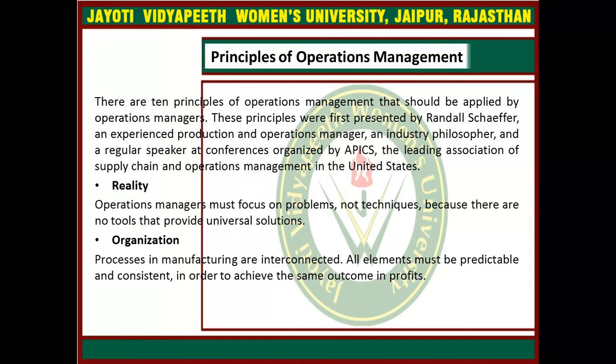In this, operations managers must focus on problems, not techniques, because there are no tools that provide universal solutions. The second is the organization. In this, processes and manufacturing are interconnected, because in an organization all things are interconnected. All elements must be predictable and consistent in order to achieve the same outcome in profits.